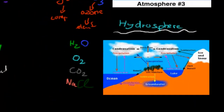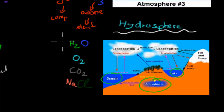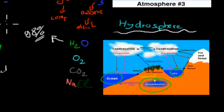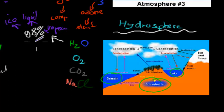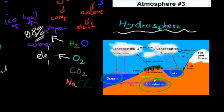Now the hydrosphere — which covers the ocean, lakes, rivers, and groundwater — is anywhere we can find water. 98% of the hydrosphere is made up of water, which we can find in the form of ice, liquid water, or water vapor. That's obviously a compound. We can also find dissolved oxygen in water, which is an element because it has only one different type of atom. And we can find dissolved carbon dioxide, which is a compound because it has more than one different type of atom.